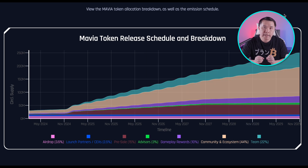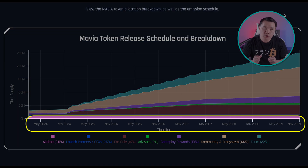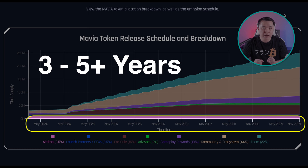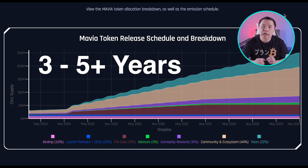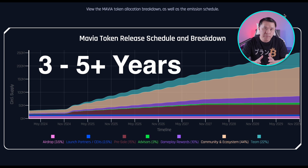Notice that in MAVIA's chart it goes from 2024 to 2029. In general, I'd like to see at least a 3–5 year vesting schedule. That way I know that the insiders and early investors are not going to dump on us, and it gives a good time frame for tokens to be released over time so that demand can meet the supply coming to market.